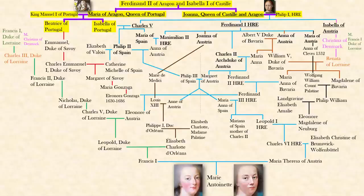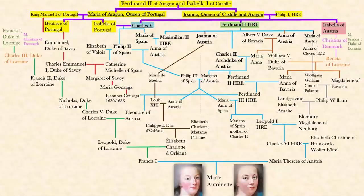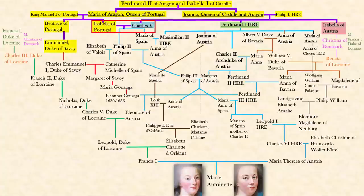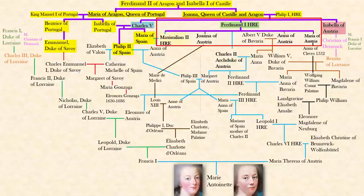Philip and Manuel of Portugal and their wives Joanna and Maria are all cousins — I'll save that relationship for another day. Joanna had three main kids: Charles V, Ferdinand the First, and Isabella of Austria. In this generation there's one cousin marriage: Charles V marrying his first cousin Isabella of Portugal. Everyone else marries outsiders, though they could be related further back in history.